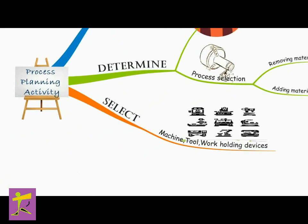Selection of machines, tooling, and work holding devices: Once the appropriate type of process has been determined, the next step in process planning is to select appropriate machines, equipment, tools, and work holding devices to accomplish the required operations. There are many factors which influence the selection of machines.